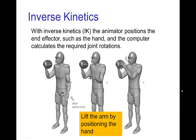For this reason, sometimes the motion is specified using inverse kinematics. In this case, the animator would control the position of a so-called end effector. The end effector might be the hand, so the animator would position the hand and then the computer would calculate the angles for the elbow and the shoulder.